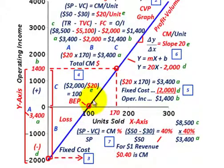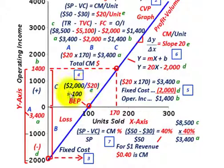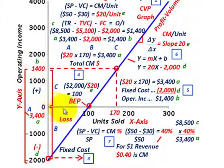We have to determine a break-even point on this profit-volume line. That's simply taking the $2,000 in fixed cost and dividing it by our contribution margin per unit of $20 — that's the $50 selling price minus $30 variable cost. That gives us our break-even point of 100 units. We're going to have a loss based on our fixed cost up until the point where we've sold 100 units. Any sales beyond 100 units is going to start generating a positive operating income.